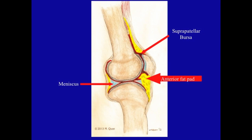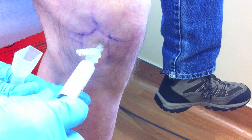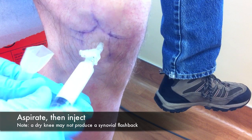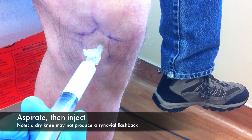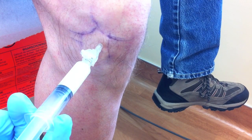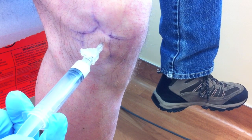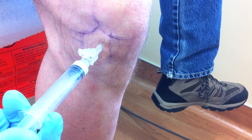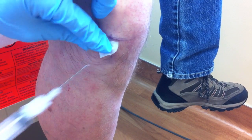As mentioned in part two, because of the anterior fat pad, expect to use the full needle length to maximize your odds of reaching the knee joint. Once the needle is in place, aspirate and then inject the cortisone solution. Remember that synovial flashback is less likely in this position unless the effusion is fairly large. You should feel minimal resistance and the solution should flow very easily. If you do have resistance, consider repositioning your needle before proceeding.